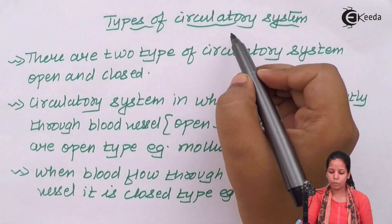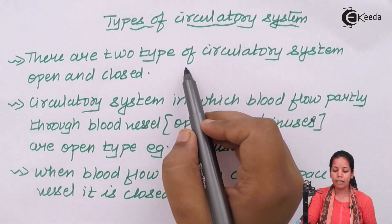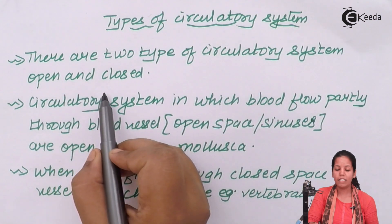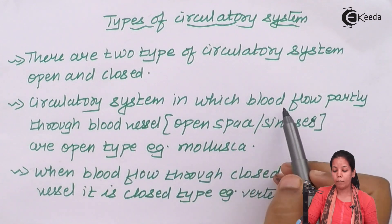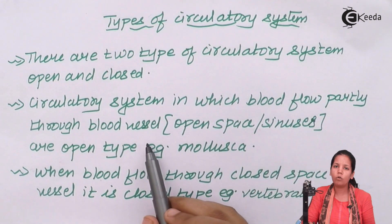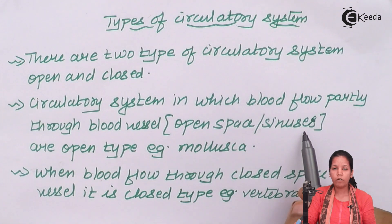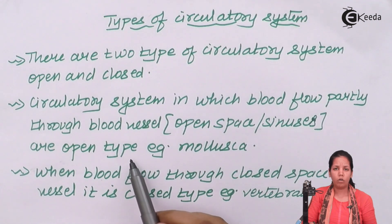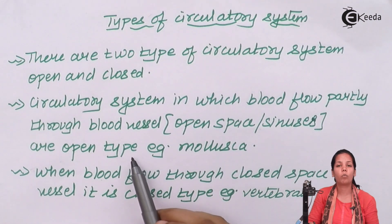In types of circulatory system, molluscans have a different kind of circulatory system compared to human beings. In the open circulatory system, blood flows partially through blood vessels — or more accurately, through open spaces called sinuses. Once blood flows through these open spaces and sinuses, it is called the open type. This is observed in most organisms such as cockroaches and molluscans. Also, some of these organisms, for example cockroaches, lack hemoglobin in their blood — that's the reason their blood is always white in color.